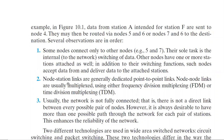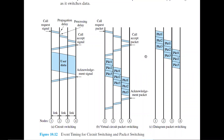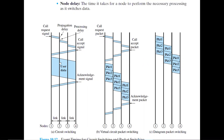Node-to-node links are multiplexed using either frequency division multiplexing or time division multiplexing, but node-to-station links are generally dedicated point-to-point links. There are two different types of technologies for wide area switched networks: circuit switching and packet switching. In circuit switching, a dedicated path is available for sending data — once the call accept signal is received, the entire path is dedicated to that single data transmission.